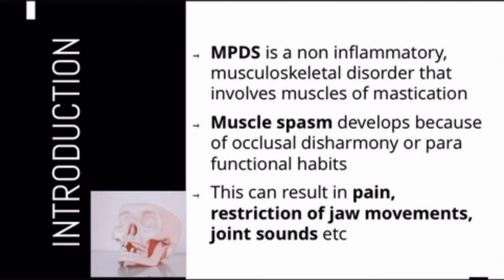MPDS is a non-inflammatory musculoskeletal disorder that involves the muscles of mastication. The TMJ, or temporomandibular joint, is a bilateral joint, and the teeth and muscles of mastication affect its functioning. In MPDS, it is mainly these muscles of mastication that are involved, leading to muscle spasm due to occlusal disharmony or parafunctional habits, resulting in pain, restriction of jaw movements, and joint sounds.